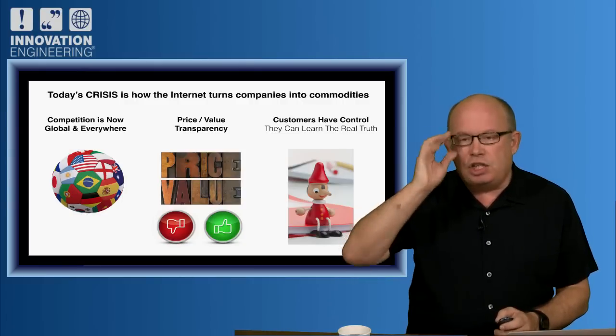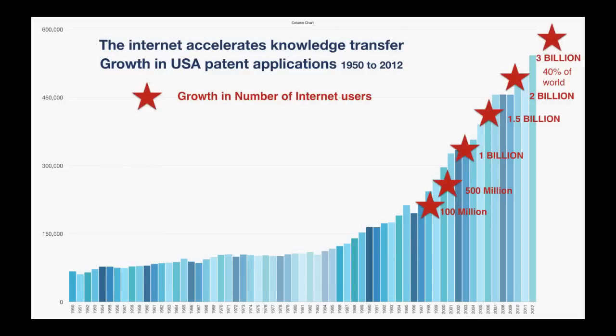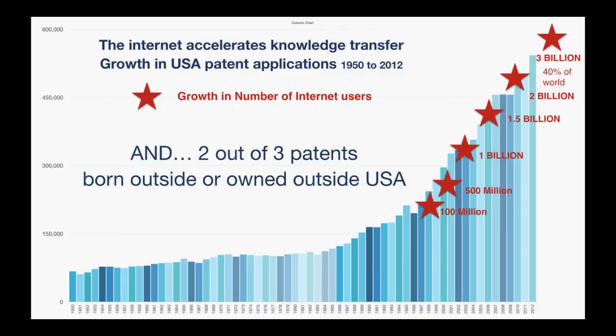The internet, with its exchange of information, has also transformed how knowledge is transferred. Look at the growth in U.S. patent applications over the last number of years. When I overlay the internet, the number of internet users, you can see it's literally exponential. Two out of three of the patents are from somebody born outside or owned outside the USA. It's truly a global phenomenon.